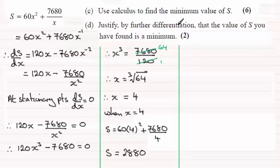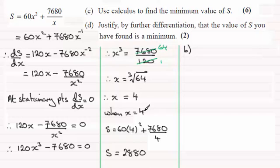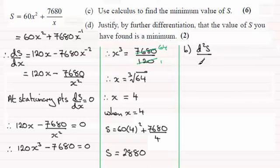Justify by further differentiation that the value of S found is a minimum. We do that by differentiating dS by dx a second time to get d²S by dx², substituting our value of 4 in, and if it comes out positive then we know it's a minimum. If you're unsure of these methods, do check out my video tutorials. So we need to find d²S by dx².